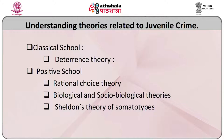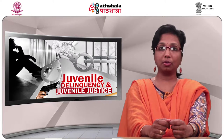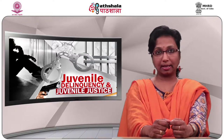Let us look at the classical school. Cesar Beccaria is considered the main proponent of the classical school and explained his thoughts in the book On Crime and Punishment. According to Beccaria, people do what they do because they derive pleasure from their acts. The two main concepts emphasized here are free will and rational choice. Rational choice means criminal activity is motivated by the principles of gratification of pleasure and avoidance of pain, and this is the rationale to choose to commit crimes. Free will represents the individual's responsibility for behavior, and the society holds the person accountable as the action is assumed to be a result of rational choice.